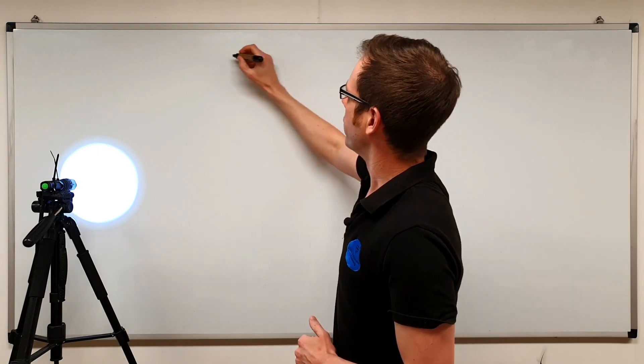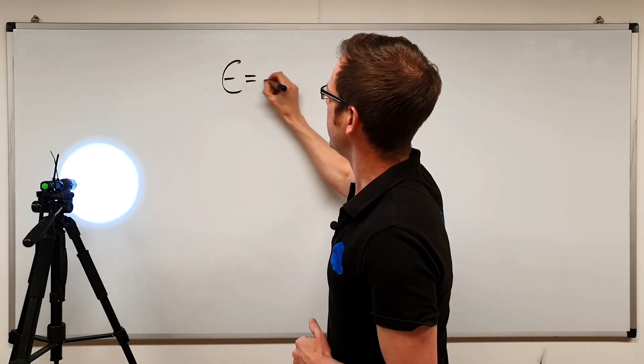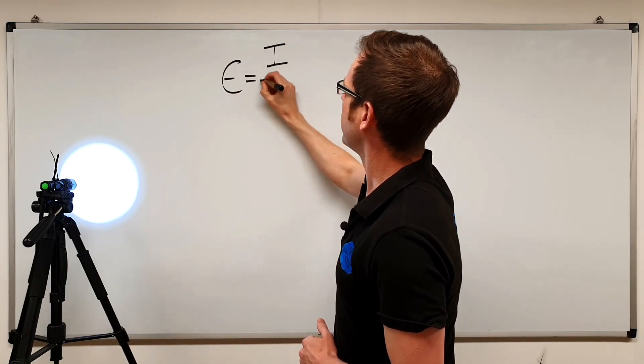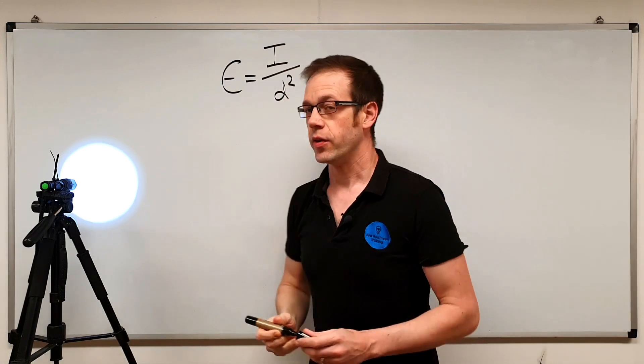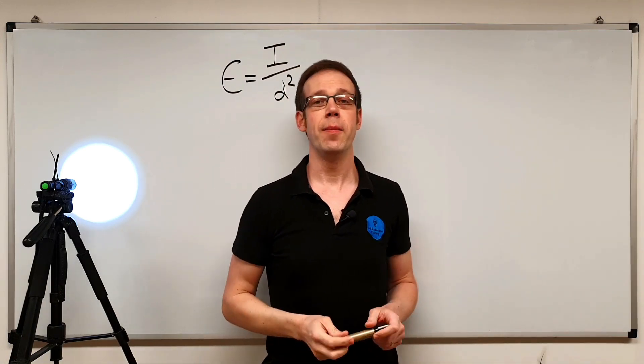Now the inverse square law, as it applies to lighting, brings us to a brand new formula that looks something like this: E equals I divided by D squared. That's the new formula that we're going to need to remember.